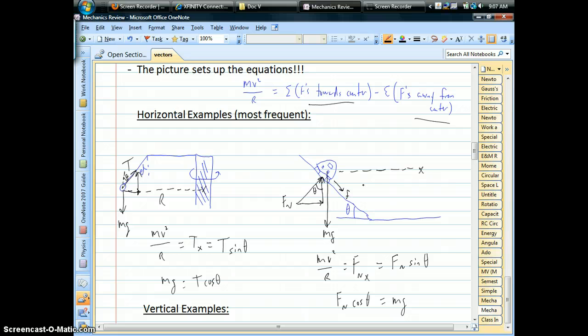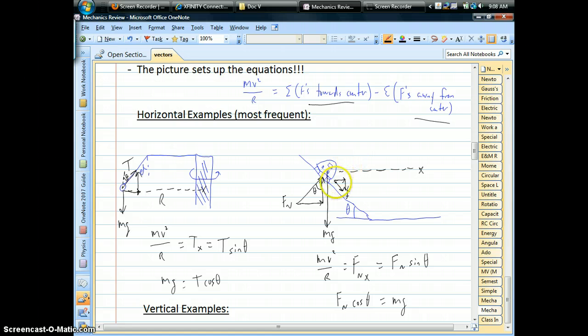So notice too, friction, because it's parallel to the hill, makes an angle with that horizontal line, with the radius line. So part of friction is going sideways, part of friction is going down. And if you do the geometry, we have our angle right there.